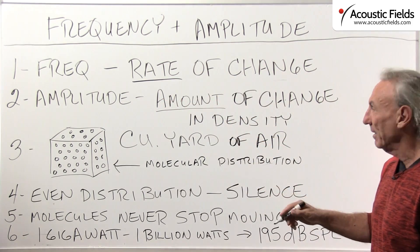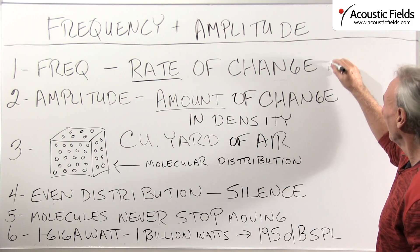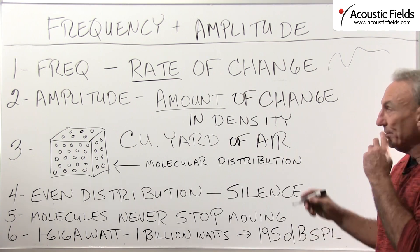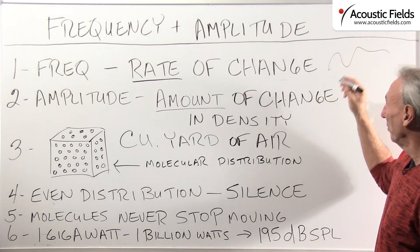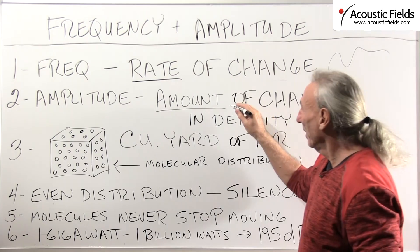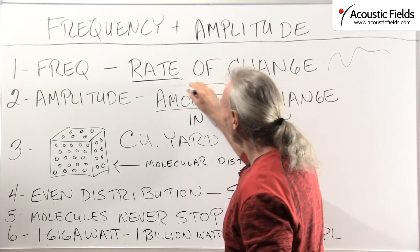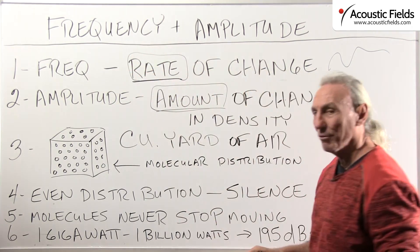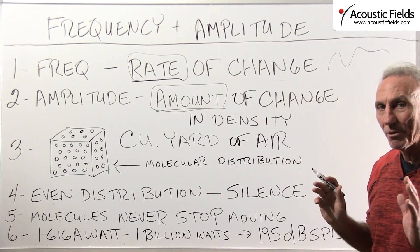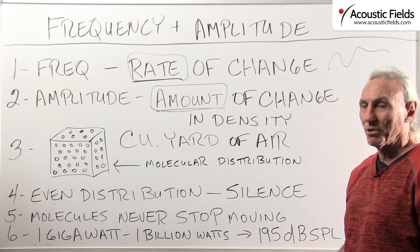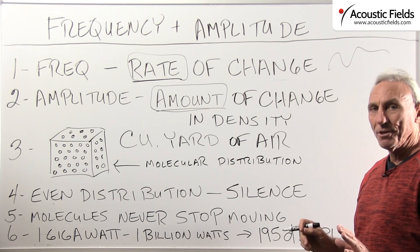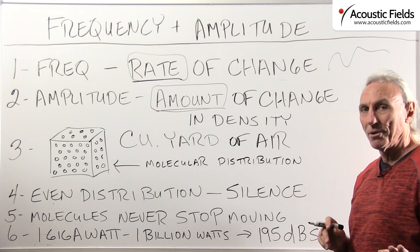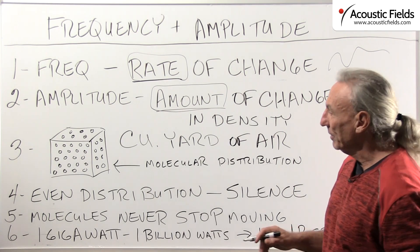Frequency is the rate. We all see frequency response on our amplifier's performance, our speaker's performance. But amplitude is a little bit different. Amplitude is the amount of energy, and frequency is the rate at which that energy occurs. So let's do a little visualization and see if we can figure out from a molecular level what it really means.